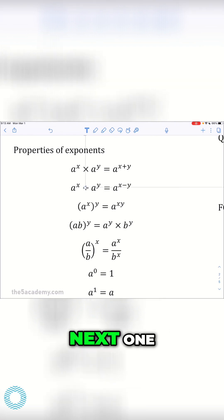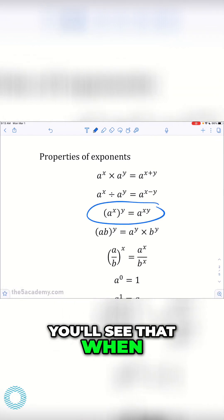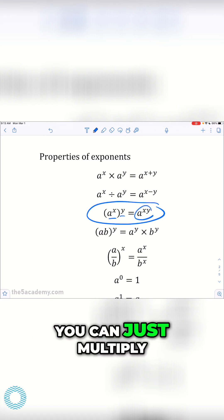So with the next one here, you'll see that you can basically, when you have an exponent to an exponent, you can just multiply the exponents.